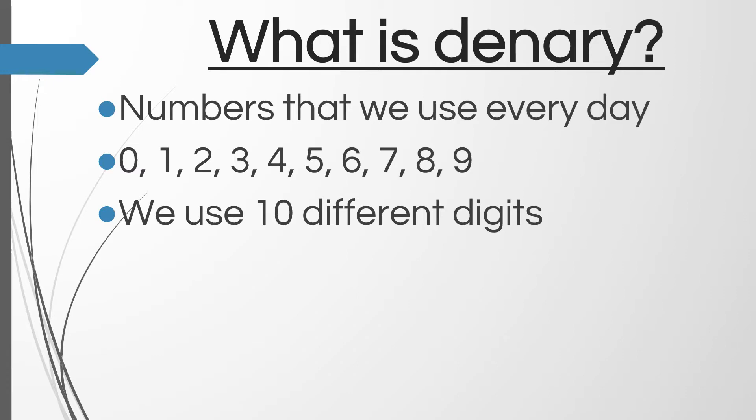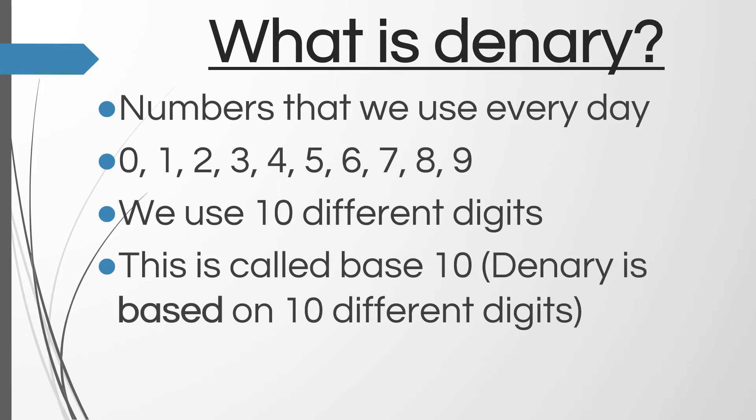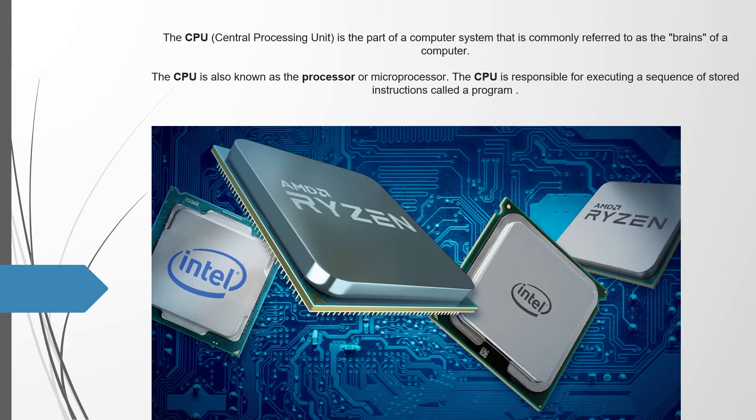We use 10 different digits, and with these 10 digits we can make any number we want in the world. This is called base 10. Denary is based on 10 different digits. The central processing unit is part of a computer system that is commonly referred to as the brains of a computer.